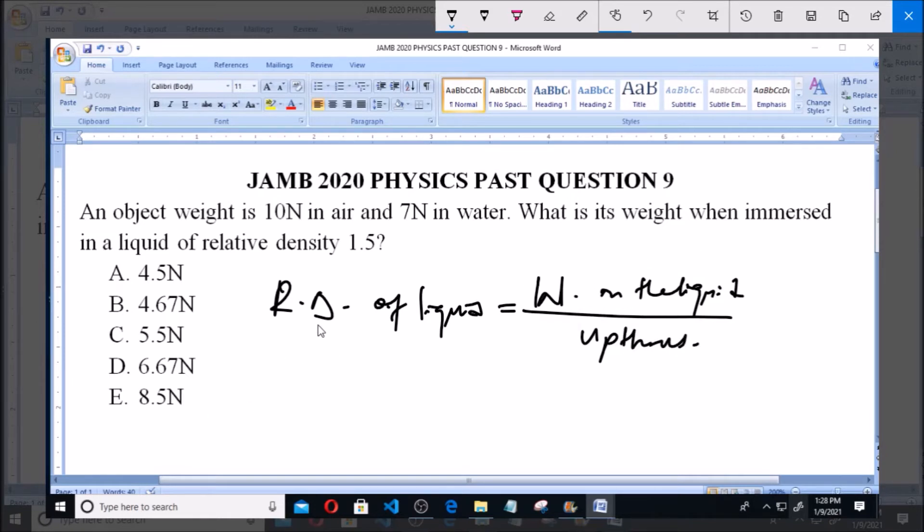Now, the relative density of this liquid is given to be 1.5 but we have to find the upthrust. Upthrust is equal to the weight of object in air minus the weight of object in water, and that is equal to 10 minus 7, which is equal to 3N.